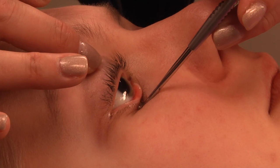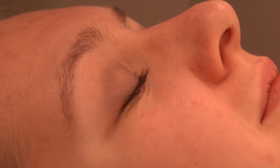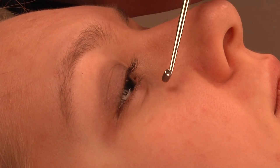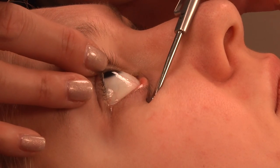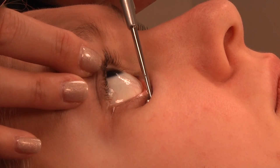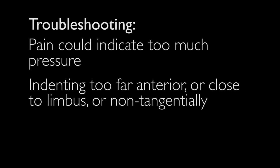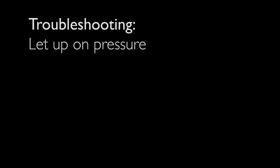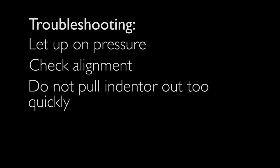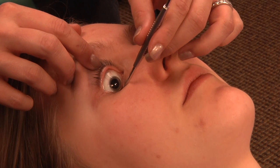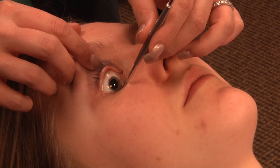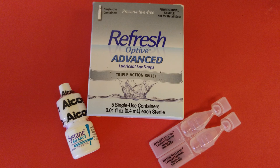The patient should feel sensation but should not be in pain during the procedure. Pain could indicate too much pressure, indenting too far anterior or close to the limbus, or the indenter not being truly tangential to the globe. On the sclera, there is risk of pinching a rectus muscle. If a patient feels pain, let up on the pressure and check alignment. Do not pull out of the eyelids too quickly, as there is risk of injury to the cornea. The patient's eye will be held open, which can cause drying; have artificial tears available if the procedure extends longer than anticipated.